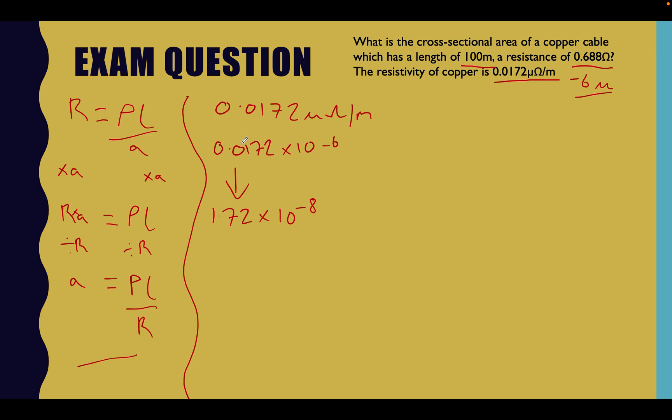Well, if this decimal point was to jump one, two places here, it would push this to a minus 8, wouldn't it? And it'd be 1.72 times 10 to the minus 8, which is this number. Exactly the same. Makes no difference.